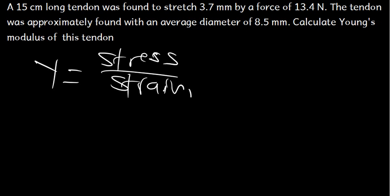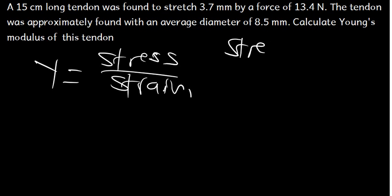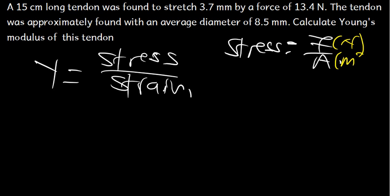We need to understand what stress is and what strain is. Let's start with stress. Stress is the force divided by the area. The SI unit of force is Newton, and the unit of area is square meter. So we can say that the SI unit for stress is Newton per square meter.